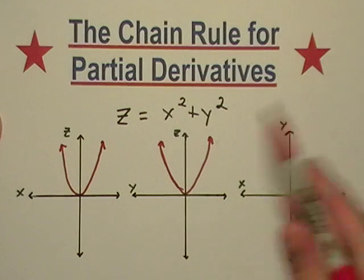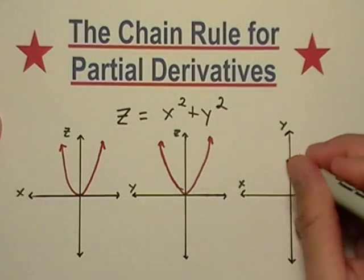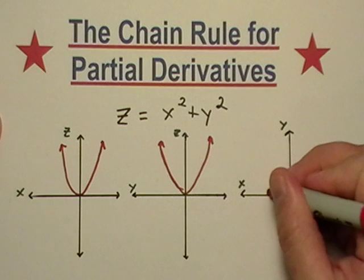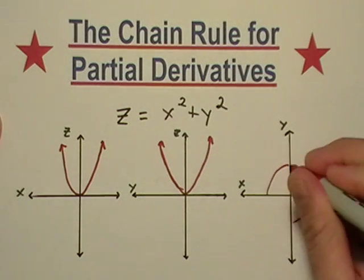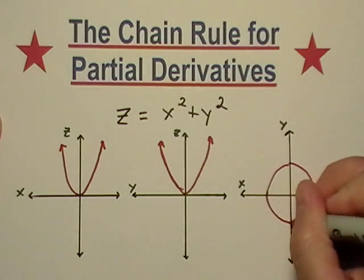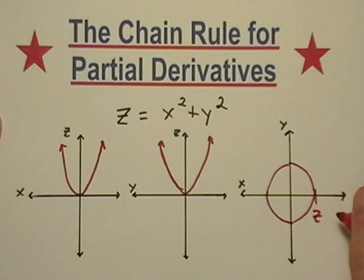Really, when I go back to the XY plane, I just have my circle, right? The radius is Z.